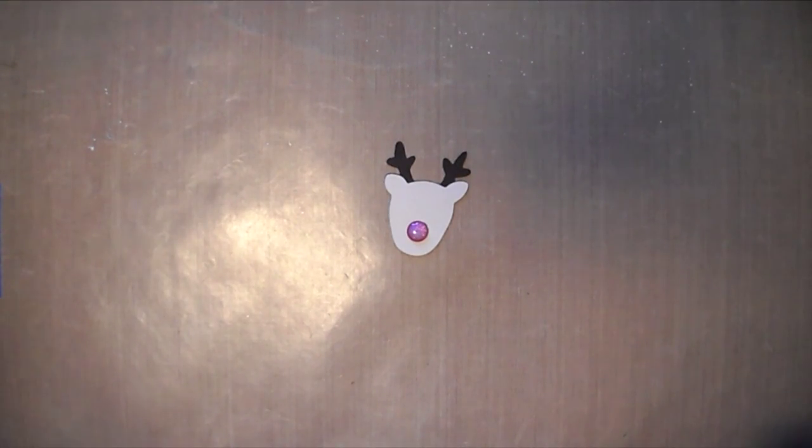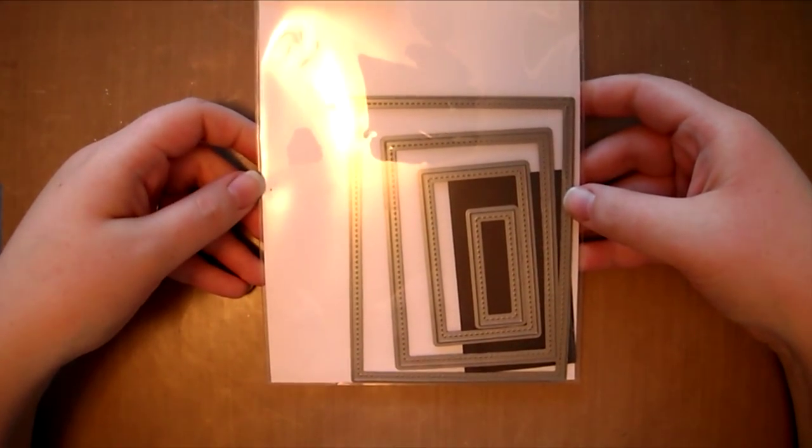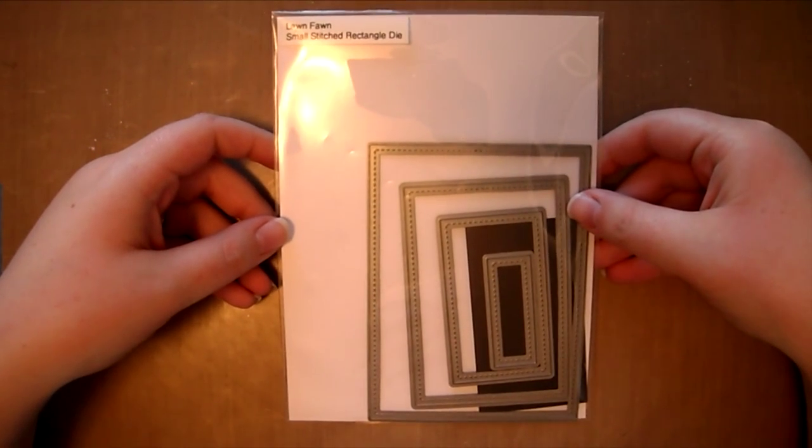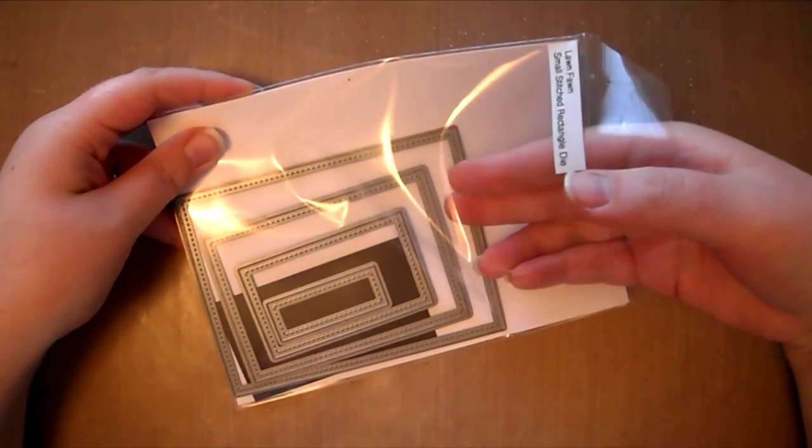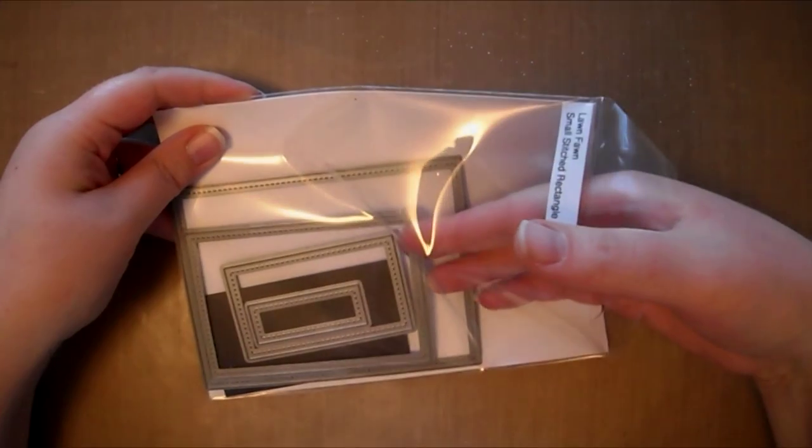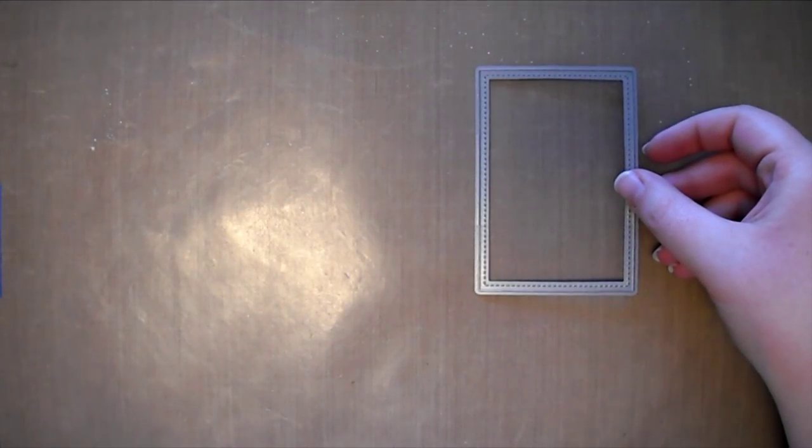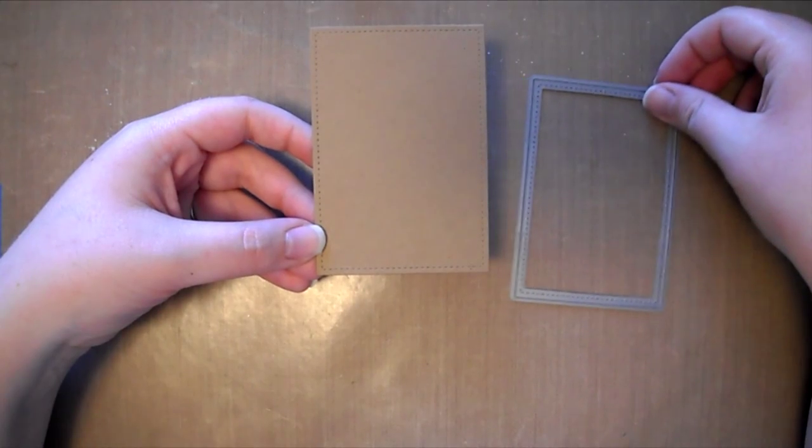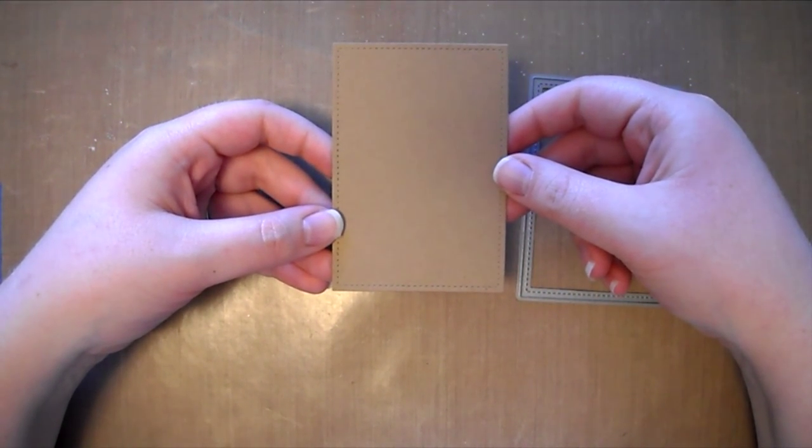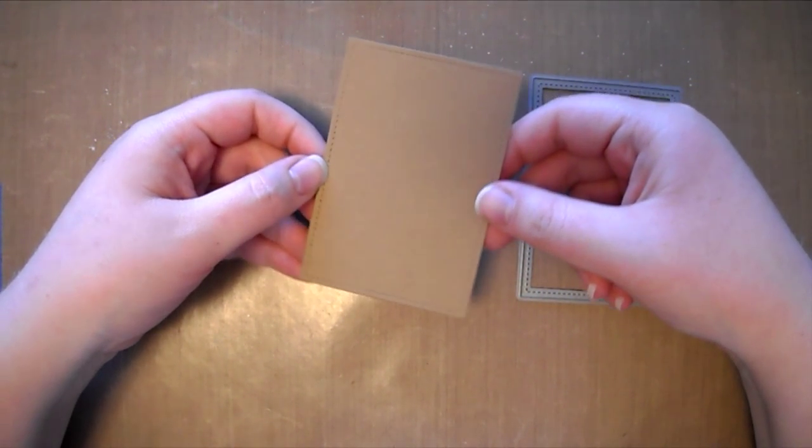I will then set that aside to dry and move on to creating the treat topper itself. For this, I will be using the small stitched rectangles from Lawn Fawn. I will be using the second largest rectangle in this set. This die normally cuts a piece that measures approximately four inches by two and three quarters. However, I didn't need my treat topper to be quite that large, but I did want to keep the stitching detail.